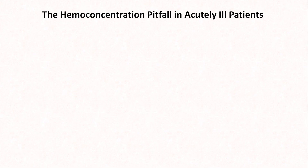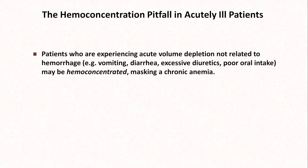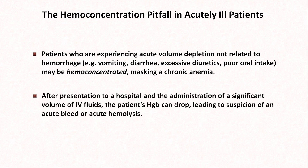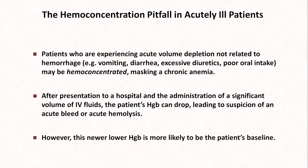There is a common pitfall when it comes to diagnosing anemia in acutely ill patients, for example those who have just been hospitalized. Patients who are experiencing acute volume depletion not related to hemorrhage — such as vomiting, diarrhea, excessive diuretics, or poor oral intake — may be hemoconcentrated, masking a chronic anemia. After presentation to a hospital and the administration of a significant volume of IV fluids, the patient's hemoglobin can drop, leading to the suspicion of an acute bleed or acute hemolysis. However, this newer, lower hemoglobin is more likely to be the patient's baseline.